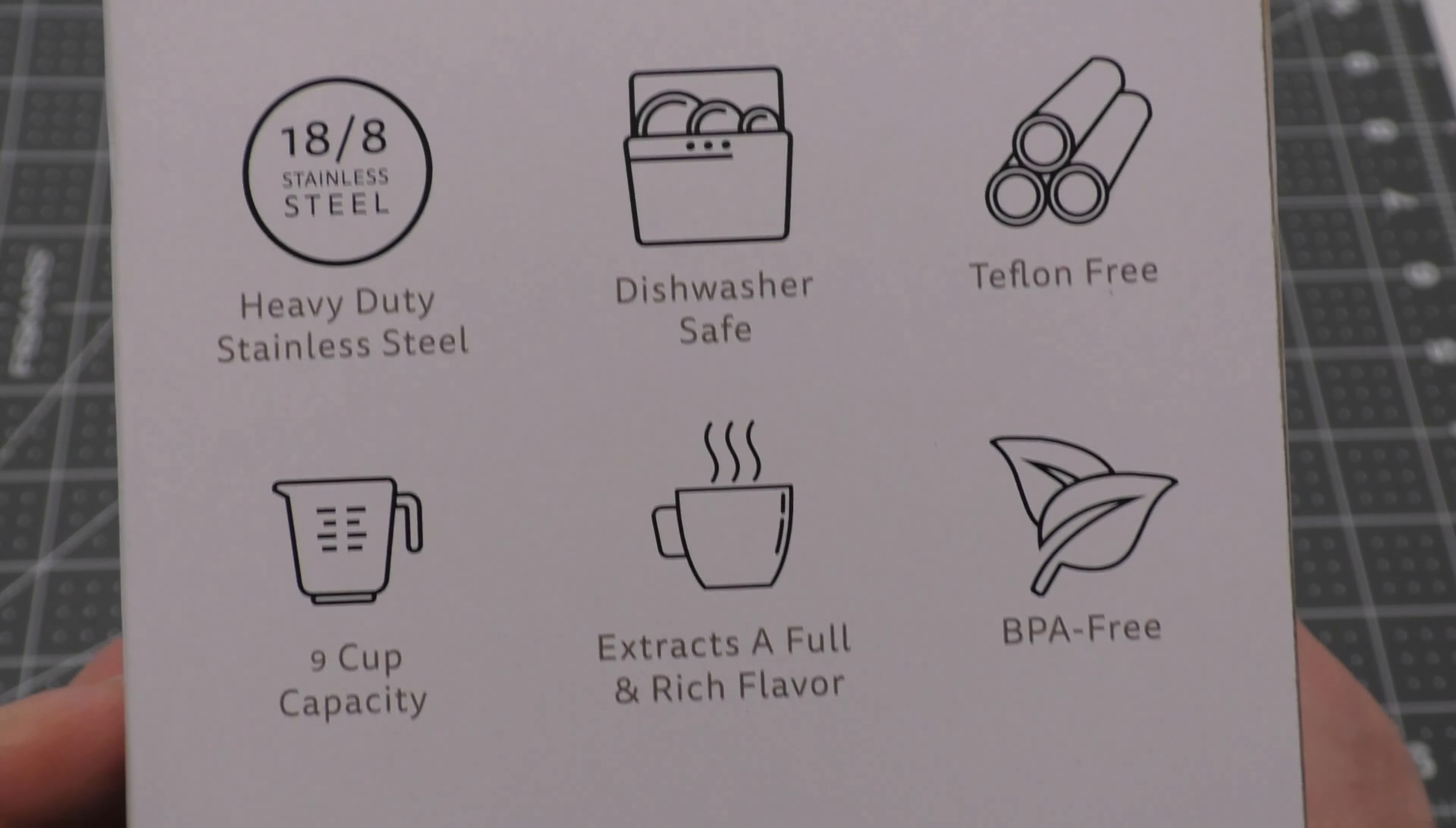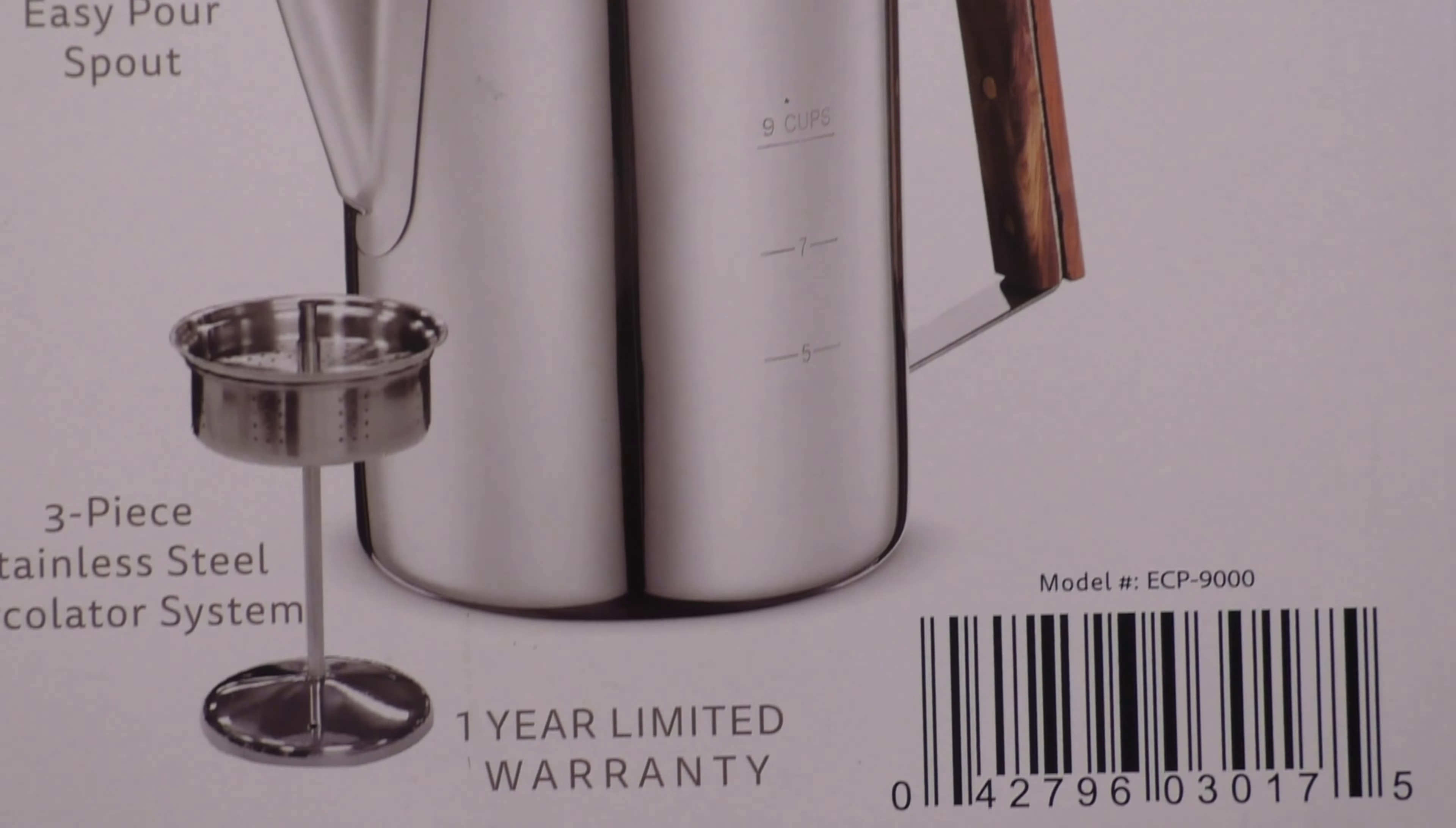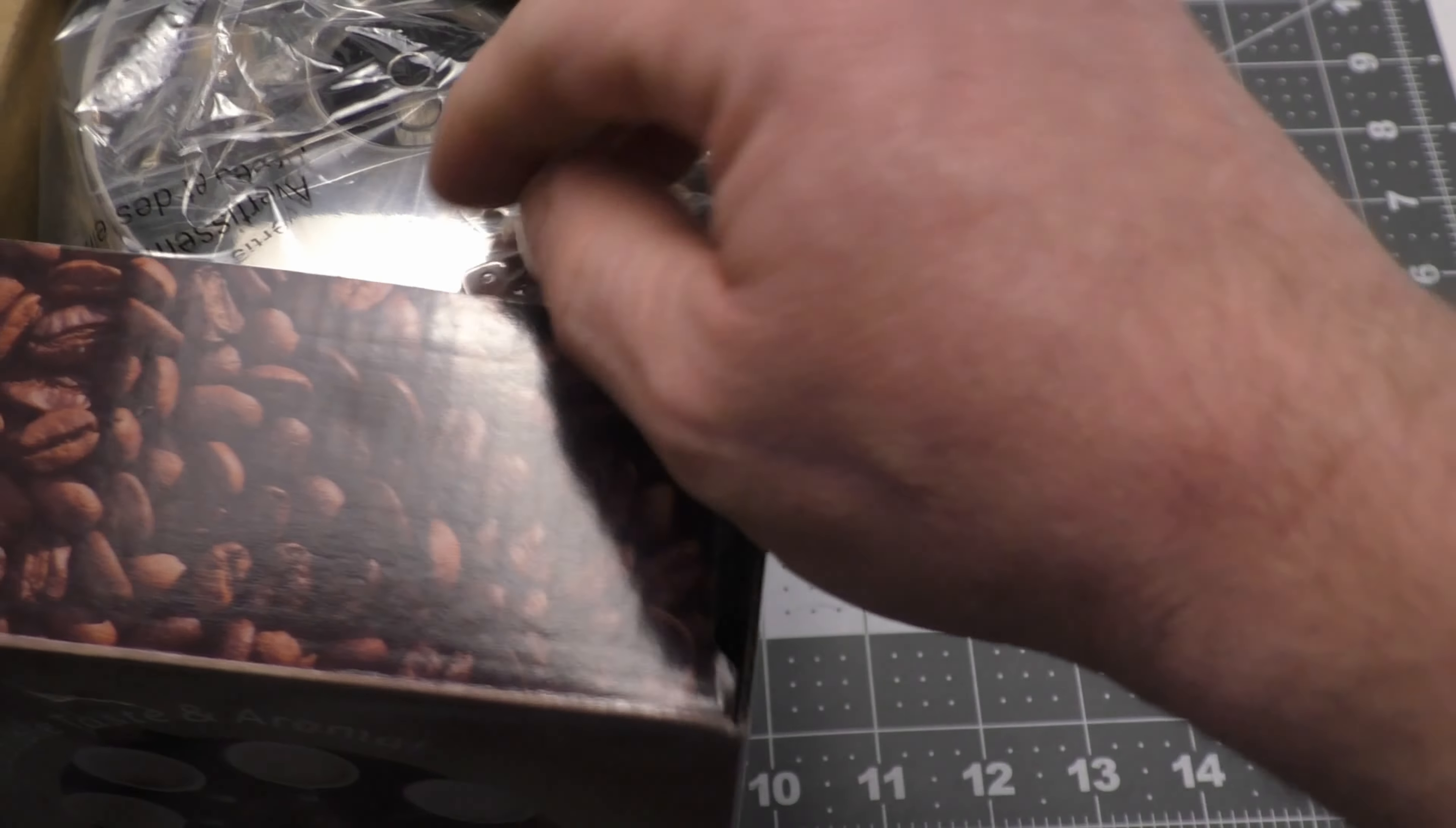So take a look here at the box. They give you some filters, you don't need filters with this. 18-8 stainless steel, heavy duty, that's excellent. Glass knob, awesome. A lot of percolators out there will have a plastic knob and that's not ideal. Let's get this out.